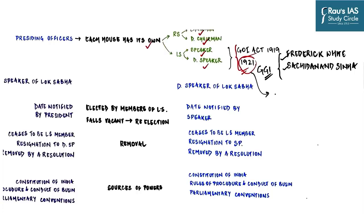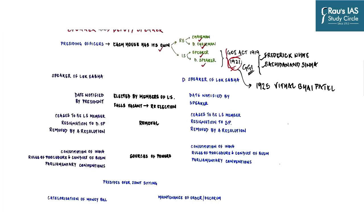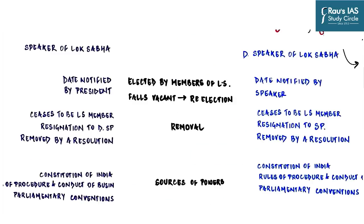A key point: the first Speaker and Deputy Speaker were appointed by the Governor General, not elected by the council. The first Indian to be elected as Speaker of the council was Vithalbhai J. Patel in 1925. Moving to the actual constitutional provisions: the screen shows complete provisions for both Speaker and Deputy Speaker. Both are elected by members of Lok Sabha, and whenever either position falls vacant a re-election is held. A key difference is that for Speaker, the re-election notification is issued by the President; for Deputy Speaker, it is notified by the Speaker.